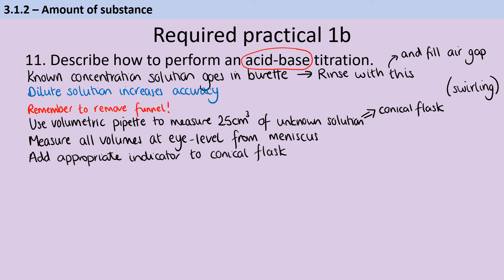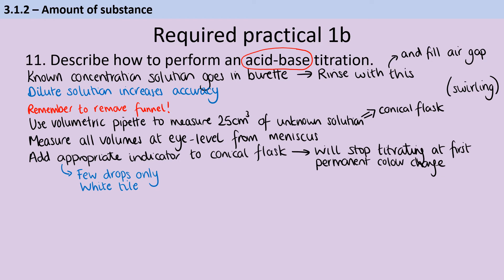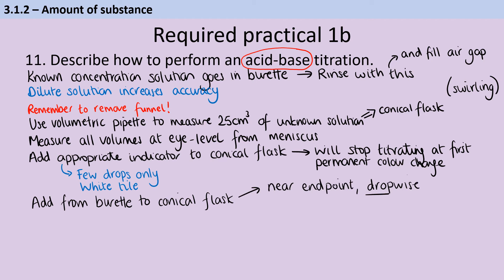For year 12 exams you don't need to know how to pick the appropriate indicator, but by year 13 you need to know that the equivalence point and the end point must coincide, so you have an indicator that changes colour when the equivalence point is reached. Only add a few drops of indicator because it has a pH of its own and will affect the titration, and use a white tile to more clearly see the colour change. You'll stop titrating when you see the first permanent colour change — that's the end point. As you approach it, having done a rough titration to know when it's coming, start doing dropwise additions, swirling after each one to homogenise and check whether the colour change is permanent.